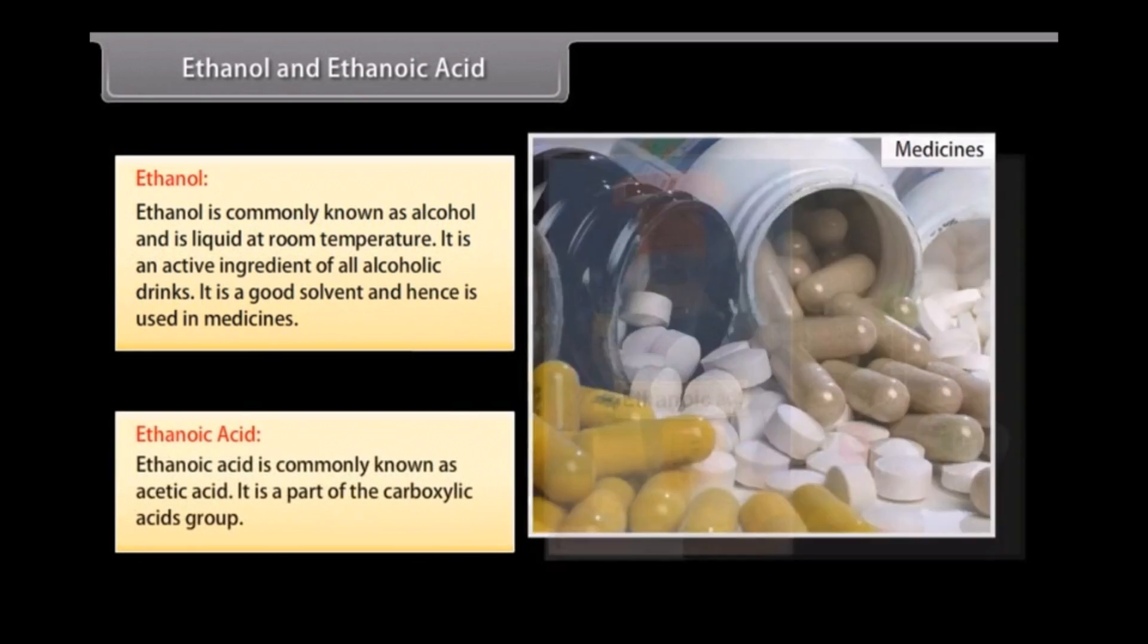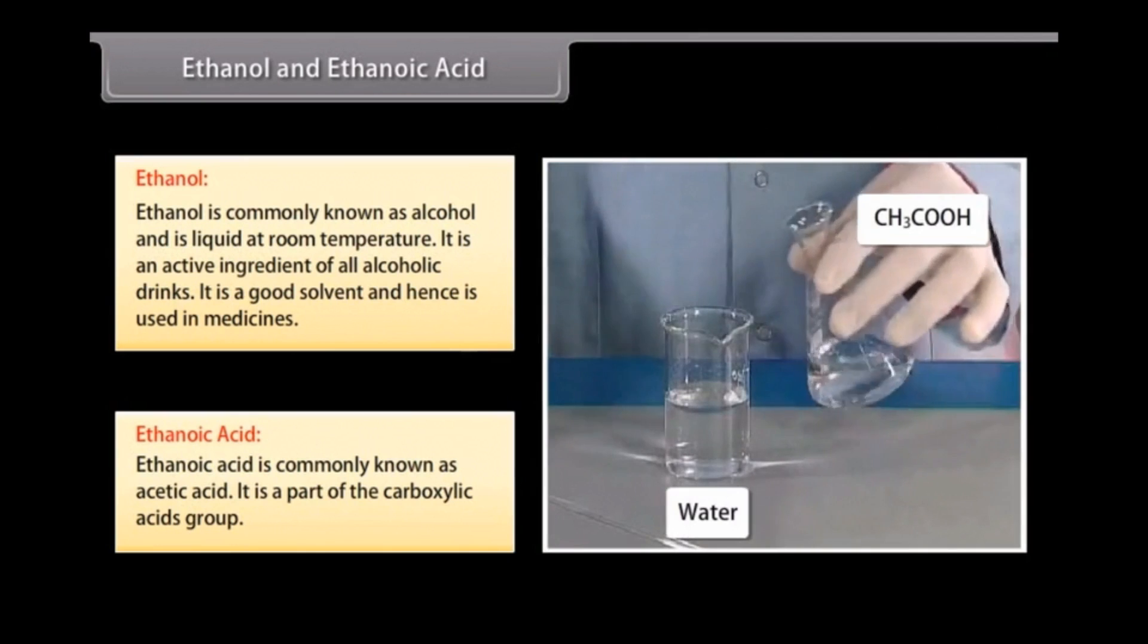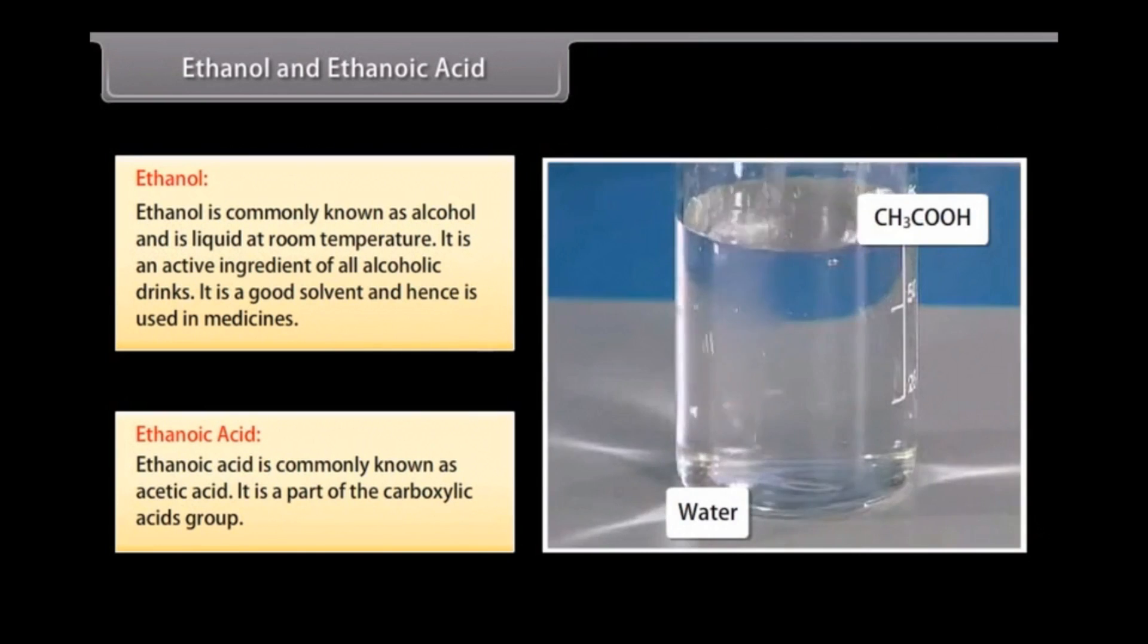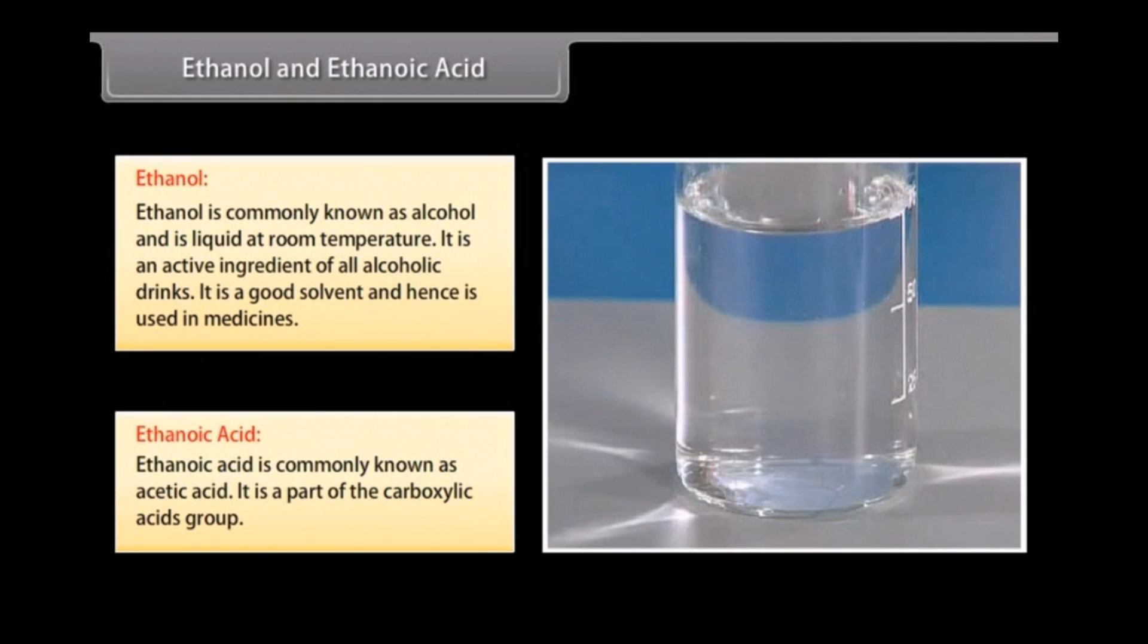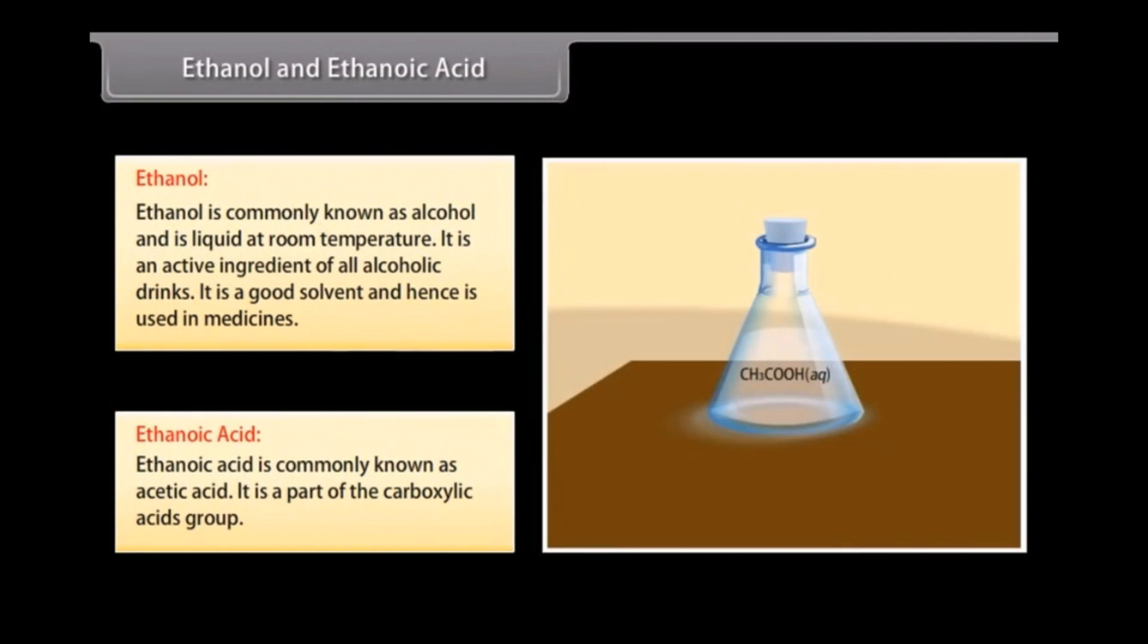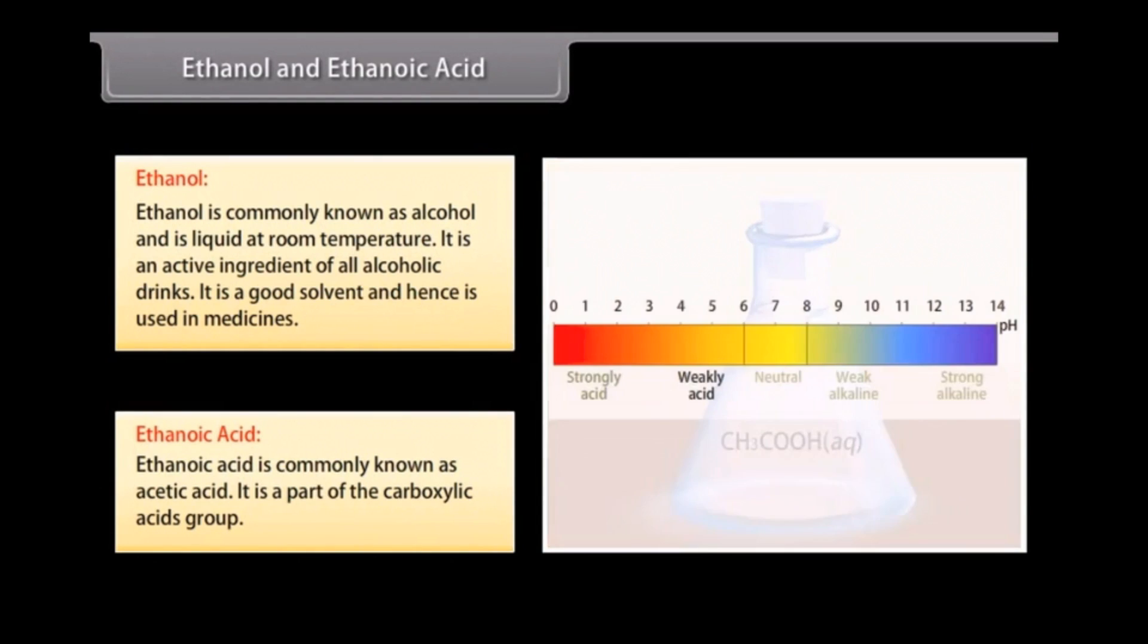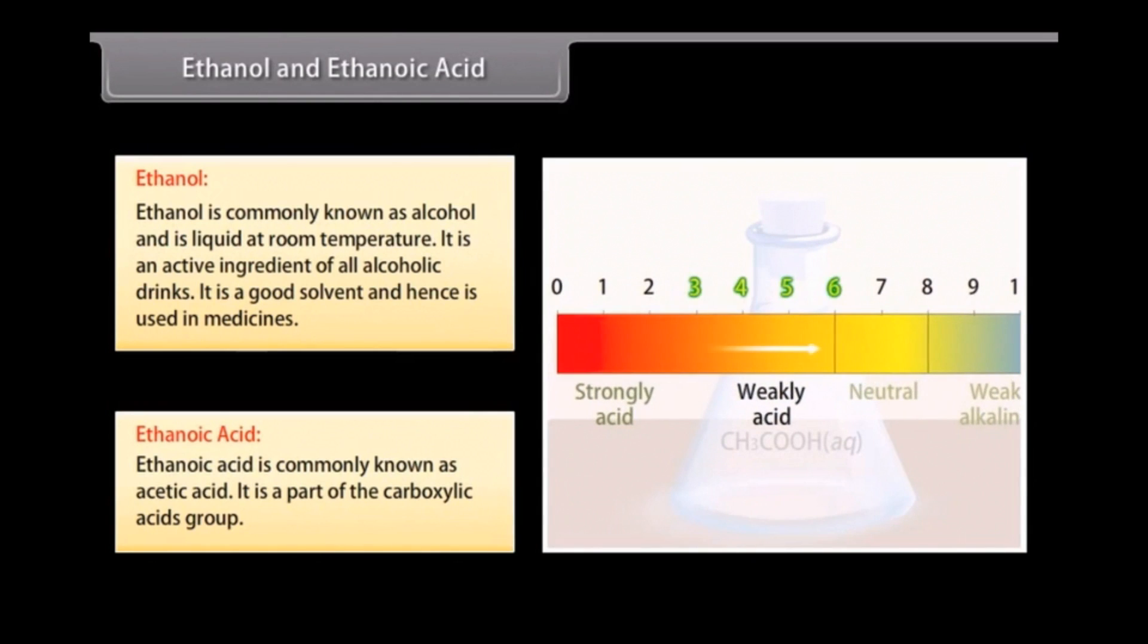Ethanoic acid. Ethanoic acid is commonly known as acetic acid. It is part of the carboxylic acid group. When 5 to 8% solution of acetic acid is mixed in water, it forms a substance called vinegar. The melting point of pure ethanoic acid is 290 Kelvin. Because of this property, it freezes during winter and hence is also known as glacial acetic acid. Carboxylic acids are characterized by special acidity. However, as carboxylic acids are not ionized, they are weak acids.